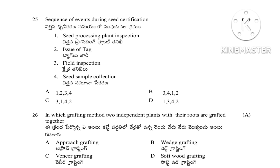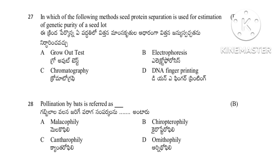Question 26: In which grafting method are two independent plants with their roots grafted together — approach grafting, wedge grafting, veneer grafting, or softwood grafting. The answer is approach grafting, where two independent plants with roots are grafted. Question 27: In which method is seed protein separation used for estimation of genetic purity of a seed lot — grow-out test, electrophoresis, chromatography, or DNA fingerprinting. The answer is electrophoresis, used to estimate seed protein.